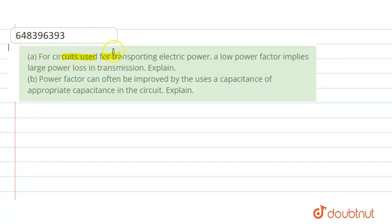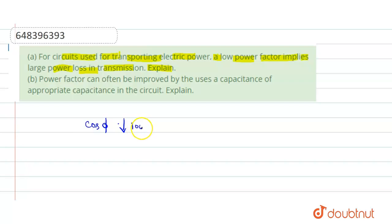For circuits used for transporting electric power, a low power factor implies large power loss in transmission — explain. So we have to explain that in transmission of electric power, a low power factor implies large power loss. When the power factor is low, the power loss in transporting lines is very high.